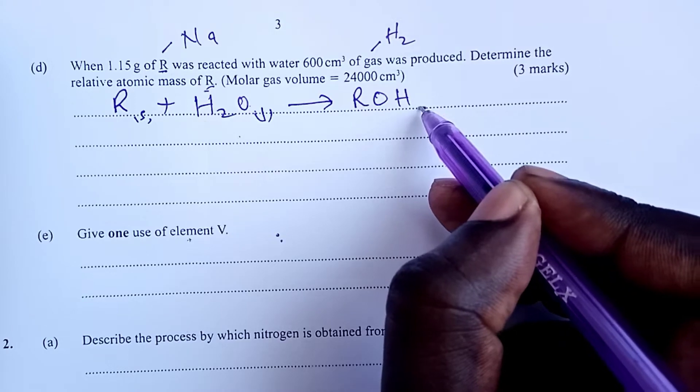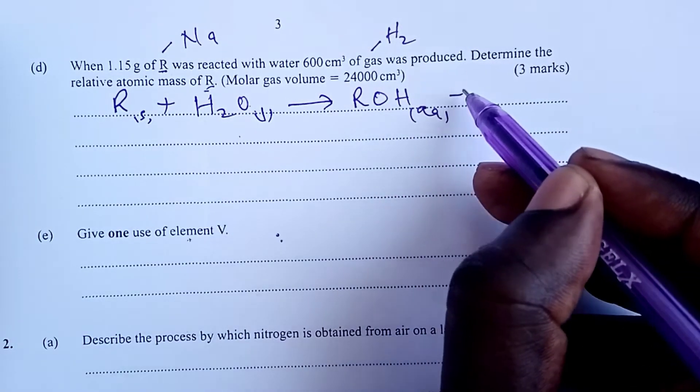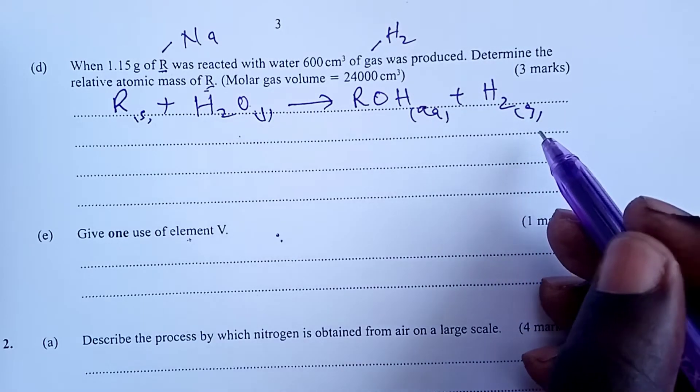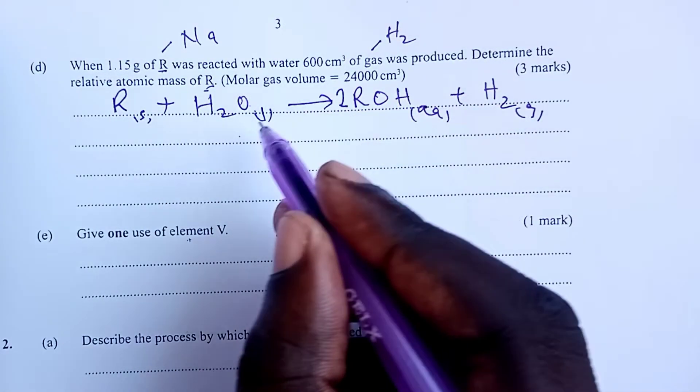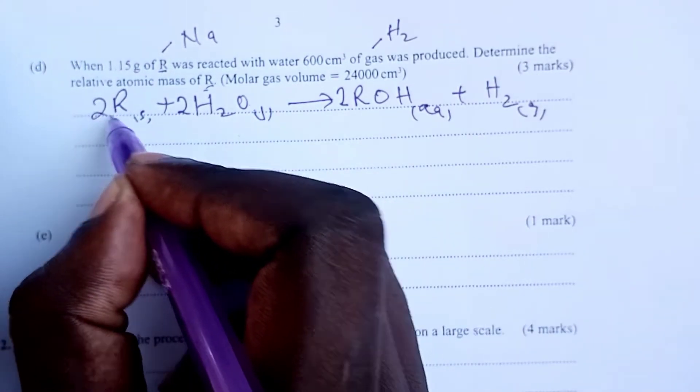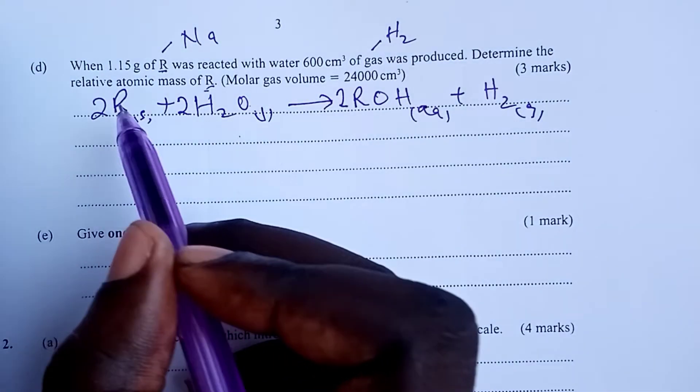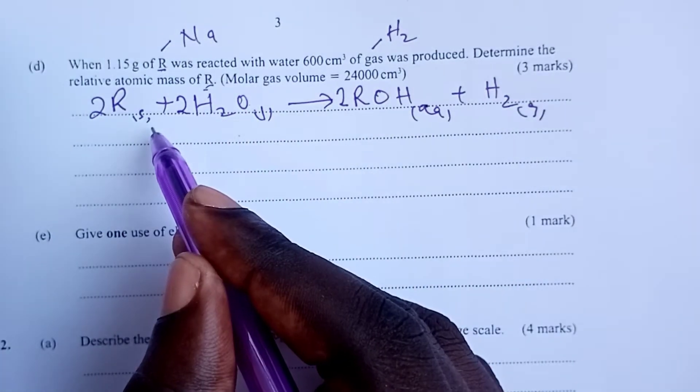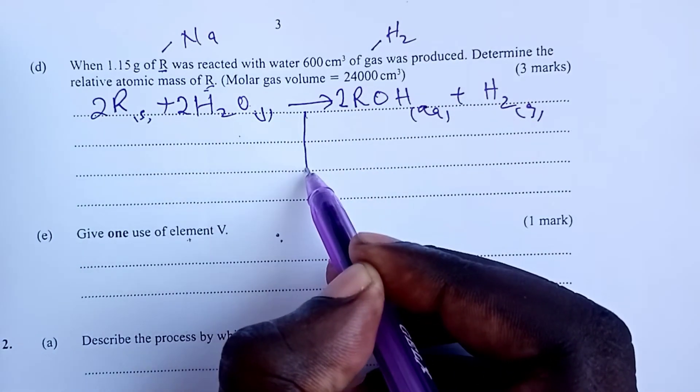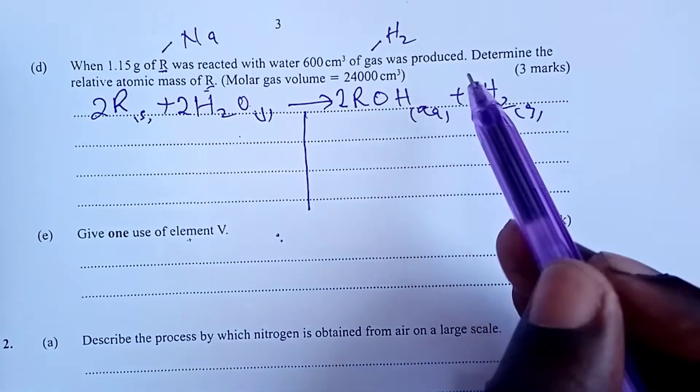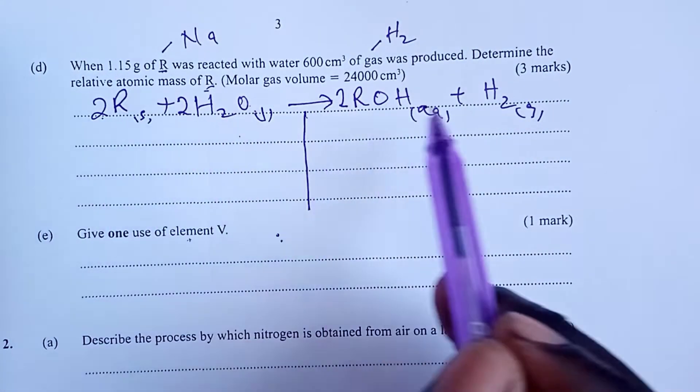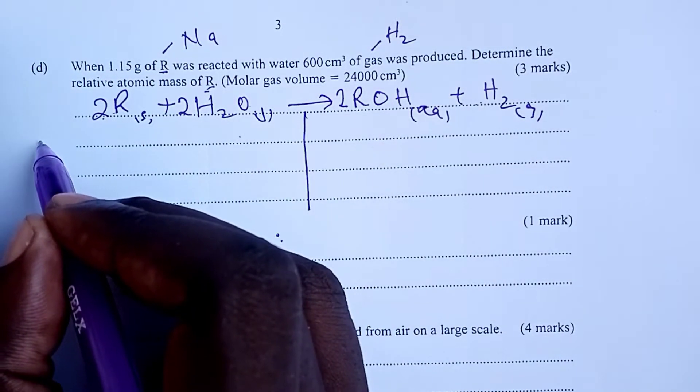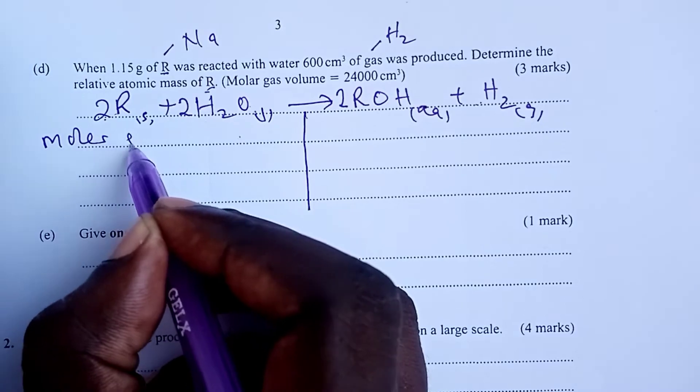The first thing we need to do here is to write an equation between R and water. We are writing an equation between R and water, and of course, we know R is valency 1, it's sodium, so R hydroxide would be written like that, and of course, plus hydrogen gas. Balancing, we would put R2 here, 2 on water, and 2 on R. If you replaced R with sodium, good enough. Having heard our equation, take note, mole ratio between gas and R is 2 is to 1, or 1 is to 2.